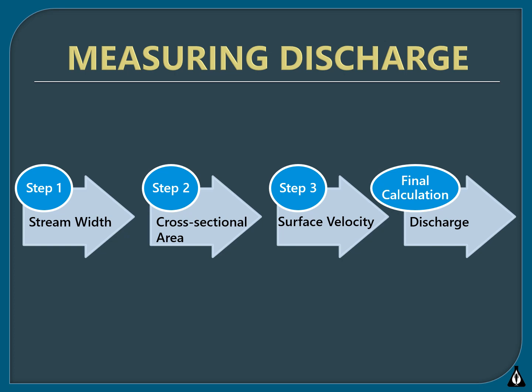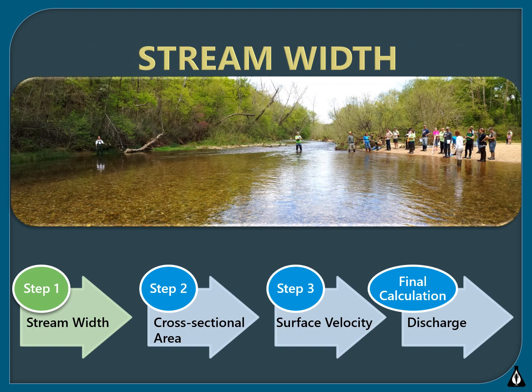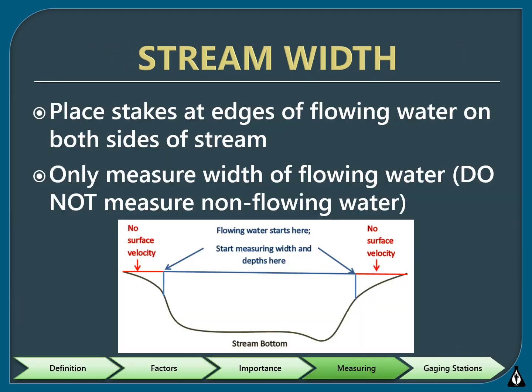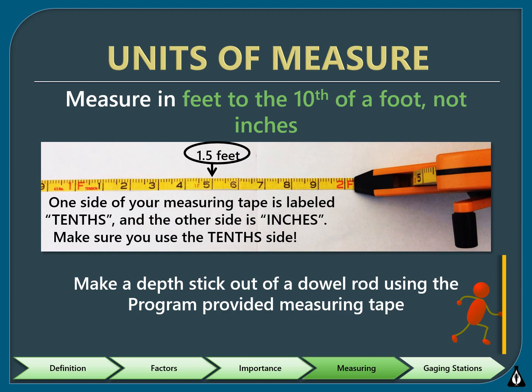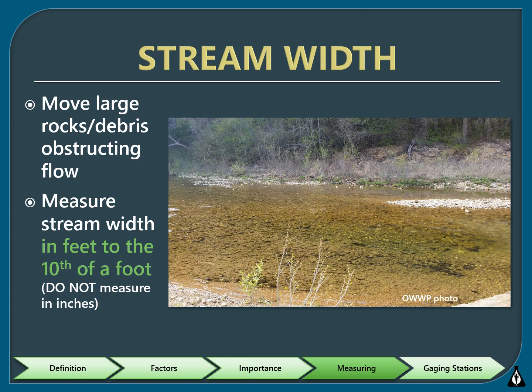Stream discharge can be measured in four basic steps. The first step is to determine stream width, which should be measured from flowing edge to flowing edge. If there is dead water at the edge of your stream, begin your measurements where the water is moving. Stretch the program-provided measure tape from one side of the stream to the other — it may help to anchor it with a stake or have a friend hold it taut. Record the width measurement in tenths of a foot; do not report in inches. Do not measure stream width across a gravel bar. If there are obstacles such as a boulder, you can move them out of the section you are measuring.